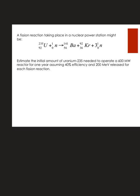Let's do a question. A fission reaction taking place in a nuclear power station might be according to the following equation. Estimate the initial amount of uranium-235 needed to operate a 600 megawatt reactor for one year, assuming 40% efficiency and 200 mega electron volts released for each fission reaction. The first thing we want to do is turn that 200 mega electron volts into joules. That doesn't seem like much, but it is just one reaction.